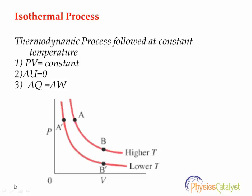Since temperature remains constant, from PV equals nRT, the right-hand side nRT remains constant. So we can say that in this process, PV remains constant. Therefore, pressure is inversely proportional to volume: if pressure is increased, volume will decrease; if volume is increased, pressure will decrease.